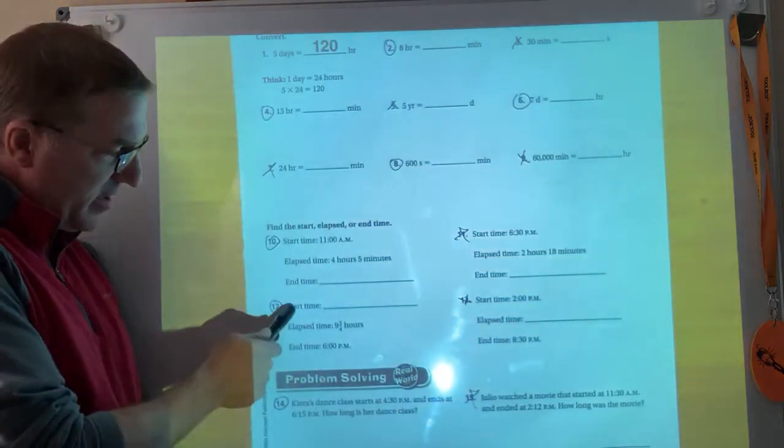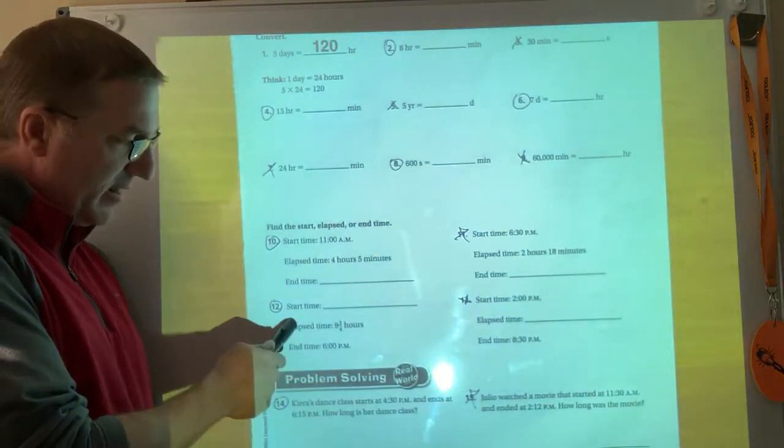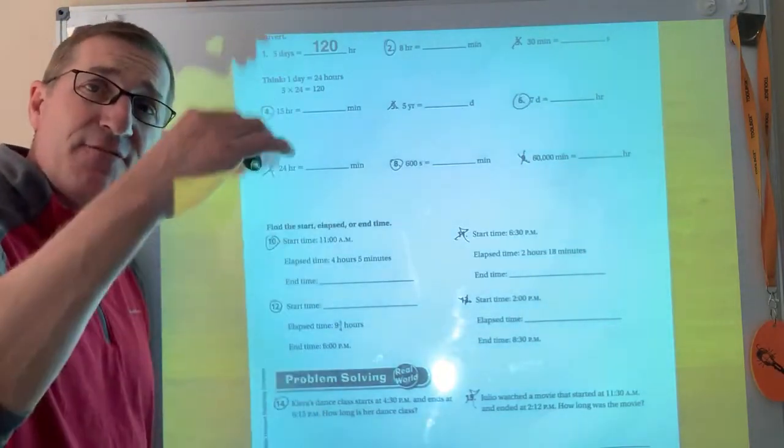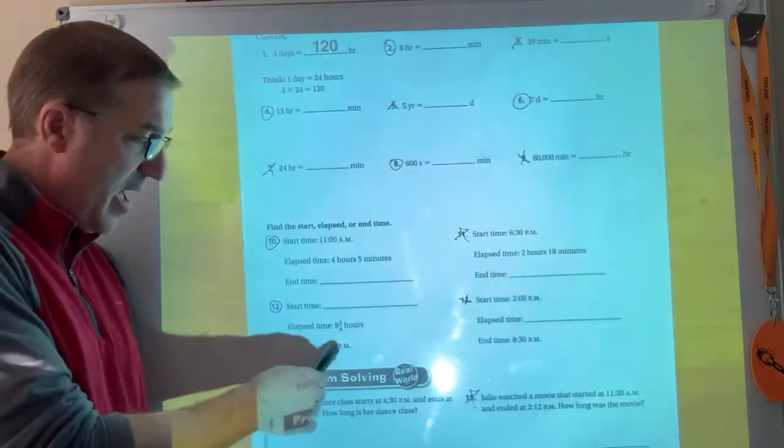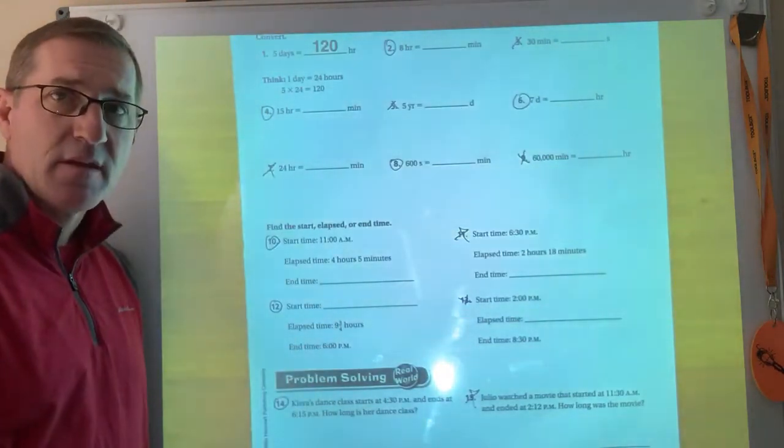Down here, I've got an end time and an elapsed time. Remember, 9 3⁄4 hours is 9 hours and 45 minutes. I'm going to end up subtracting.